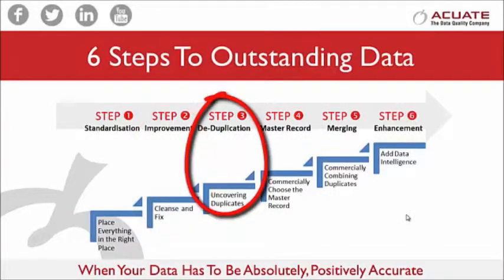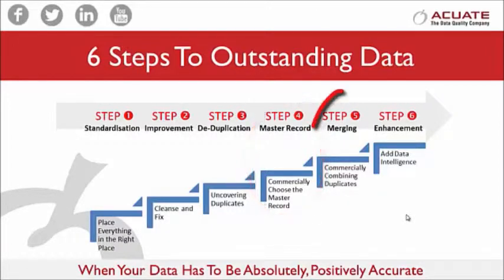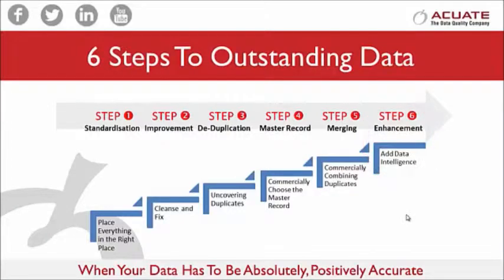Step three is discovering duplicates. Step four is commercially choosing the master record. Step five is knowing how to merge the records. And finally, step six is to add data intelligence to the record.